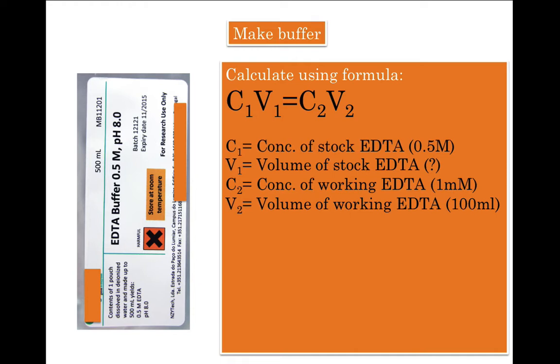V1 is the volume of EDTA, that is the amount of 0.5 molar EDTA that you would pipette out from the stock and dilute to make final concentration. C2 is the concentration of working solution of EDTA which is 1 millimolar, and V2 is the volume of working EDTA, that is 100 ml.